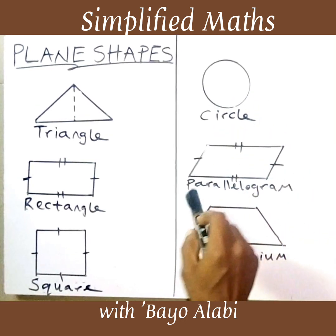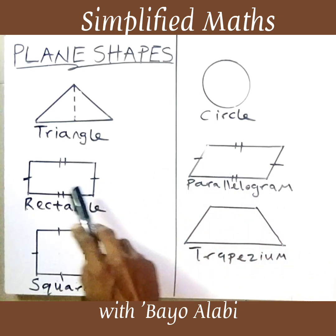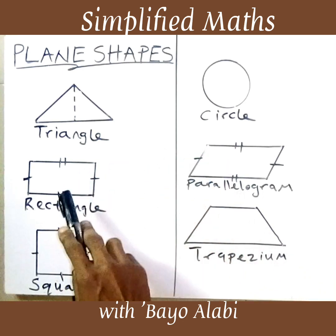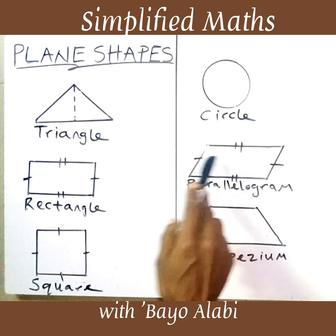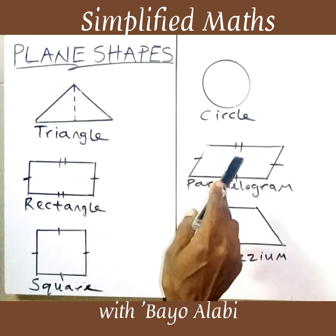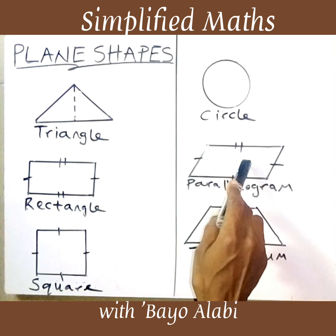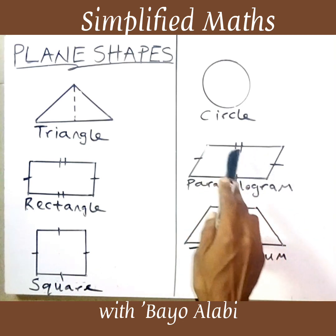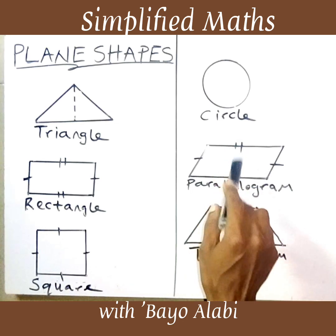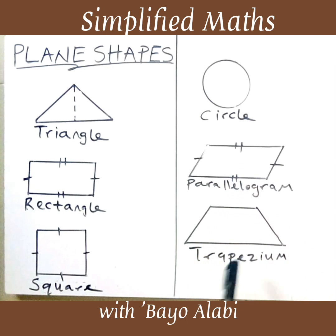The next one is a parallelogram. A parallelogram looks like a rectangle — they look alike — but a parallelogram is like a bending rectangle, one that is leaning. The difference is that a rectangle stands upright while a parallelogram is slanted. The two opposite sides are parallel and equal, just like in a rectangle.